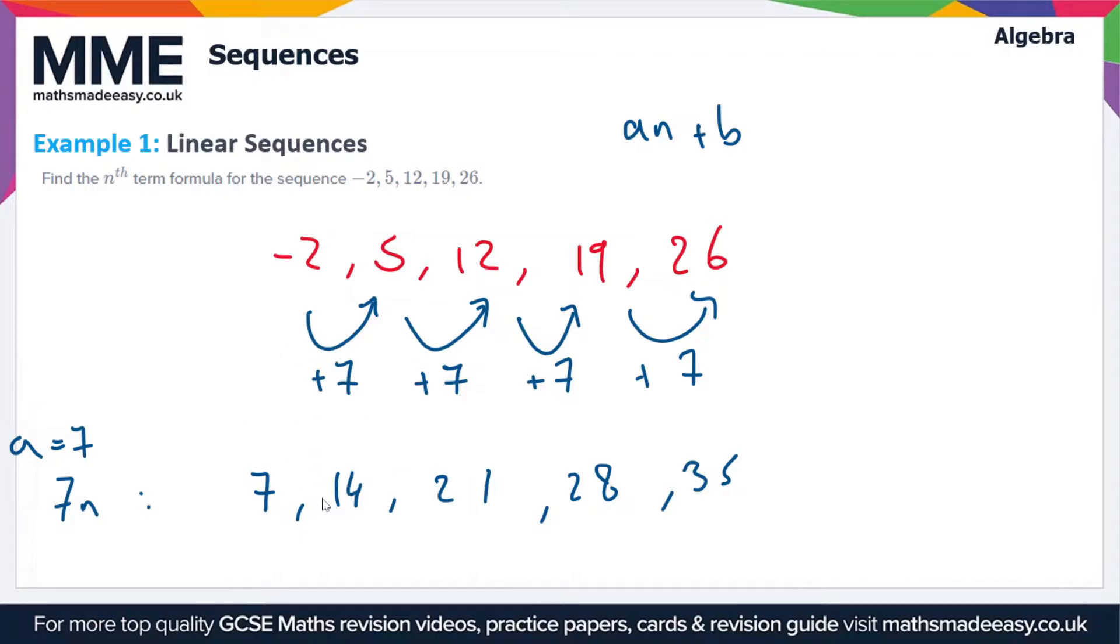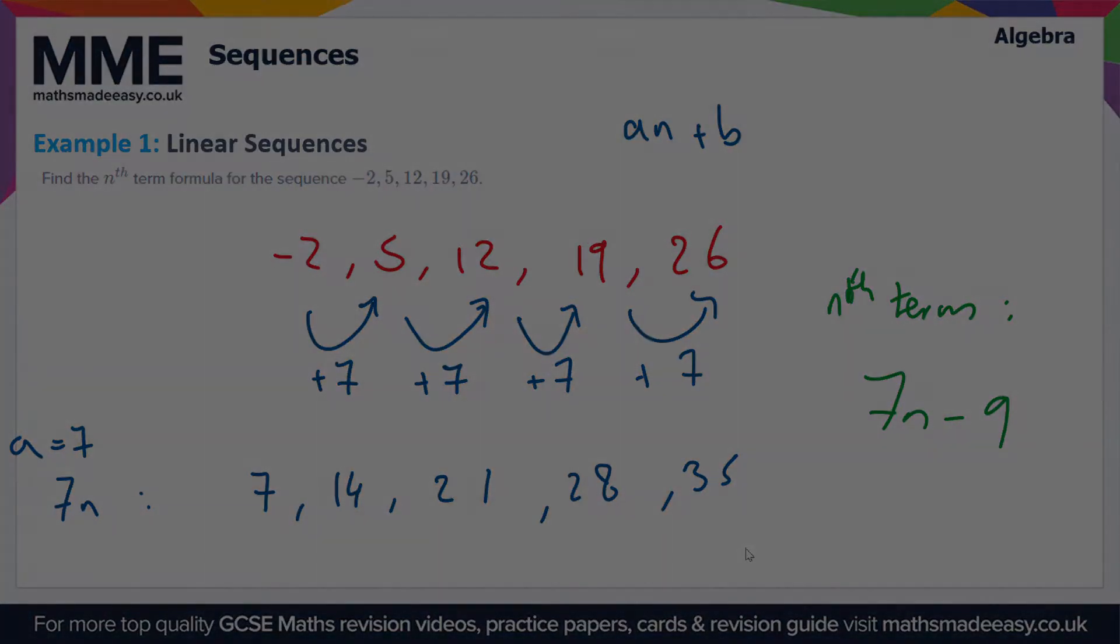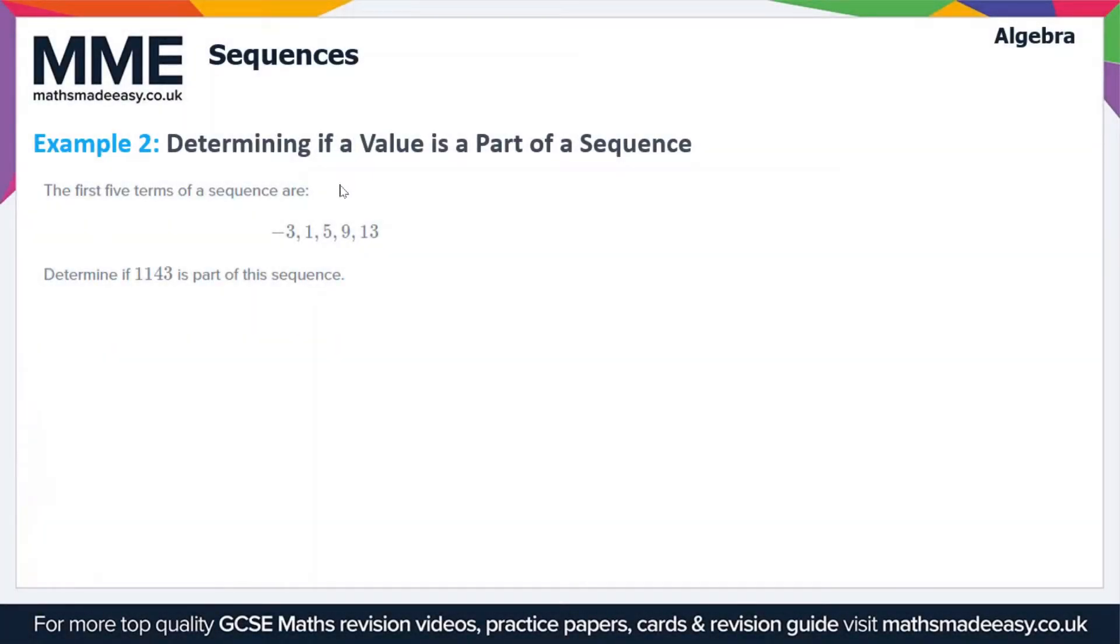To get from 7n to the sequence we're given, we need to subtract 9 from each term. So 7 minus 9 gives us -2, 14 minus 9 gives us 5, 21 minus 9 gives us 12, and so on. So our nth term is 7n minus 9.